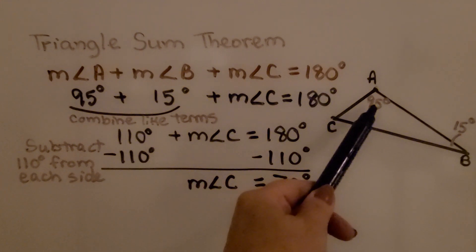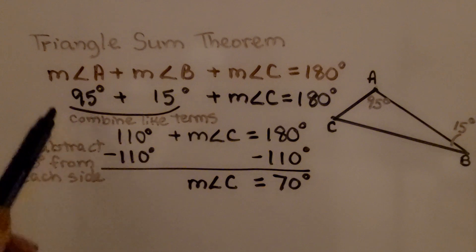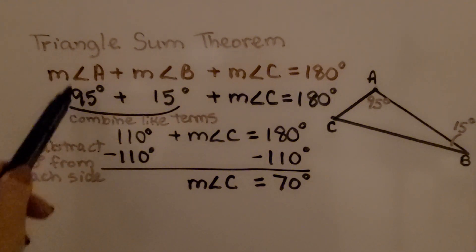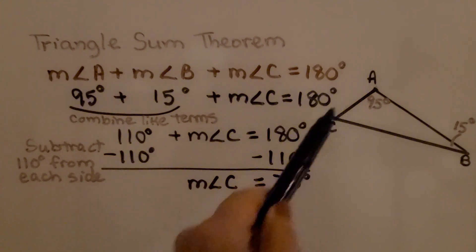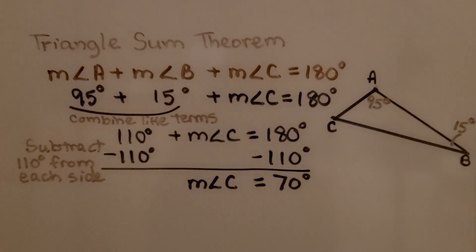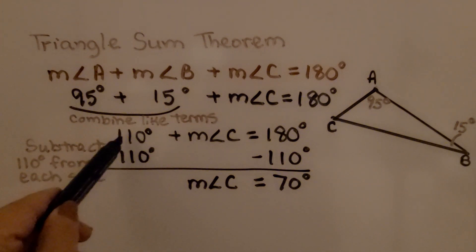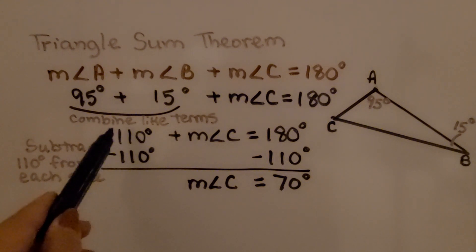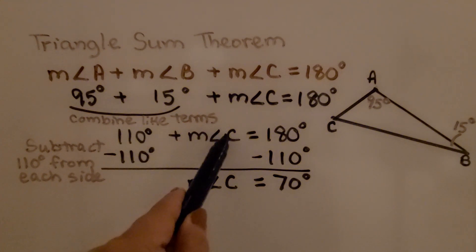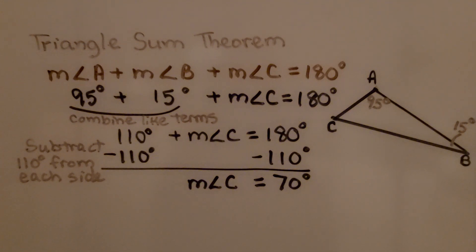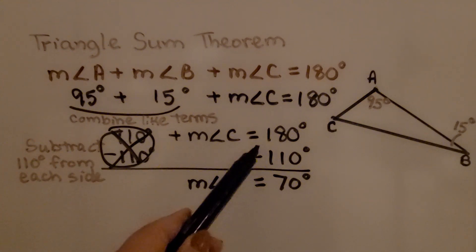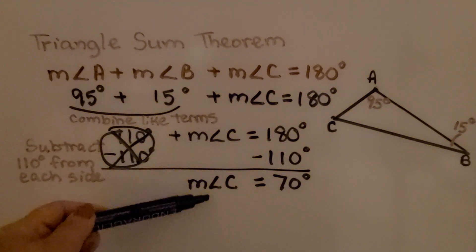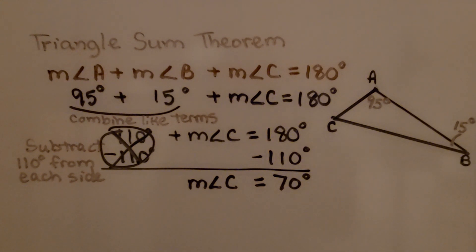If we know angle A is 95 degrees and angle B is 15 degrees, we substitute them into the equation, writing measure of angle C for the unknown, and set it equal to 180 degrees. We combine the like terms: 95 plus 15 is 110 degrees. So 110 degrees plus the measure of angle C equals 180 degrees. We subtract 110 from each side — the zero pair eliminates it — and we get the measure of angle C equals 70 degrees.